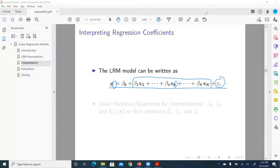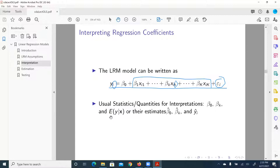And the usual quantities, statistics used for interpretations include beta_0, intercept beta_k, and expected value of y, the response variable, given x vector, or their estimates beta_0 hat, beta_k.